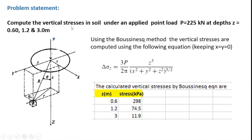Using Abaqus, we need to calculate the vertical stresses in a soil column under an applied concentrated load of p equal to 225 kN, at depths along the vertical axis set equal to 0.6, 1.2, and 3 m from the surface. Theoretically, the increase in vertical stresses are computed using the Boussinesq method, according to which the increase in vertical stress at any coordinate x, y, z due to an applied load p is obtained as delta sigma equal to 3p over 2π into z³ divided by (x² + y² + z²) raised to 5/2. Using the above formula, the increase in vertical stresses at depths of 0.6 m, 1.2, and 3 m were worked out to be 298, 74.5, and 11.9 kN per m².